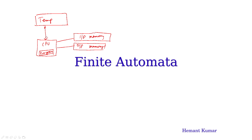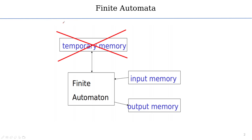This is a mathematical model of automata — here we are using finite automata. We are using temporary memory, input memory block, and output memory block. In the input we are using just what the user has entered in string format. In finite automata, the output is whether a particular string is accepted or rejected. There is no temporary block — this doesn't store anything during computation time.